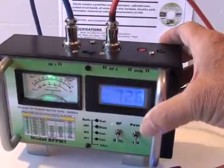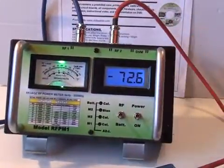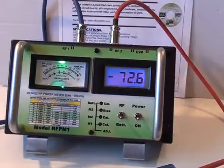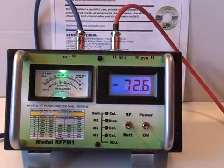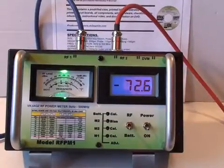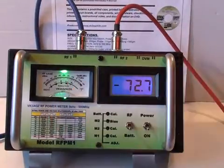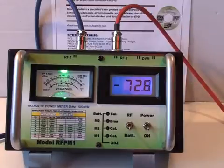The voltage appearing on the banana sockets is a buffered output directly from the AD8307 chip and is independent of the meters. It is used for setting the slope of the RF detector.